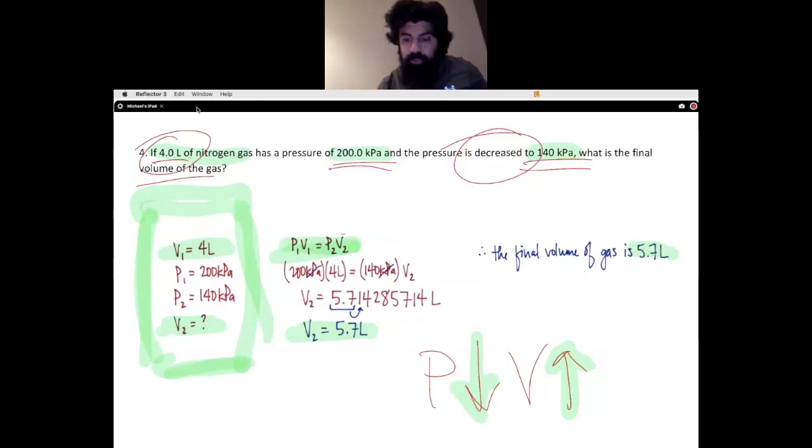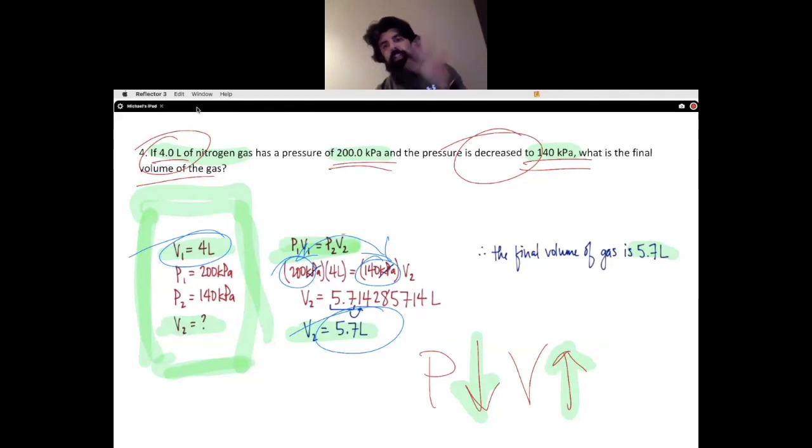Stop and think after you get the answer: did the laws make sense? Does my answer make sense to the laws? A mistake that someone can make is they might accidentally switch where these two are positioned in that formula. If they do that, this answer will be smaller than that, which means it's wrong. But a lot of times we assume I typed it into the calculator, everything's fine. Stop and think, does my answer in fact make sense? My pressure went down, so the answer to my volume should go up. And yes, it in fact did.